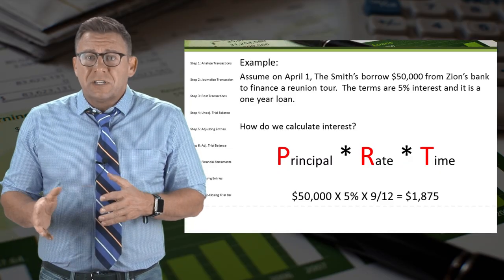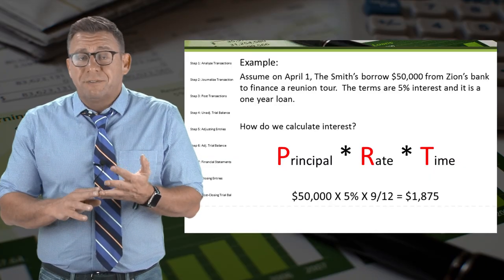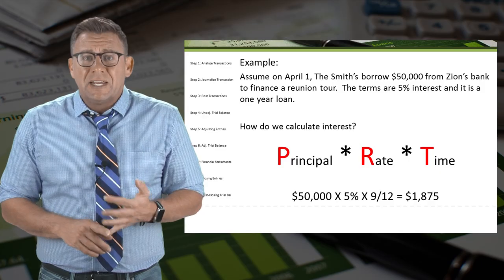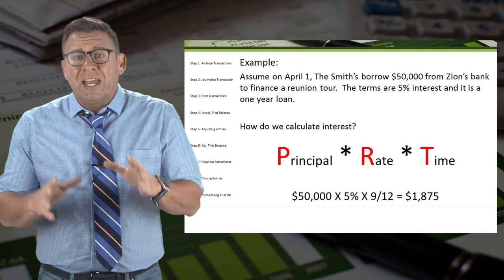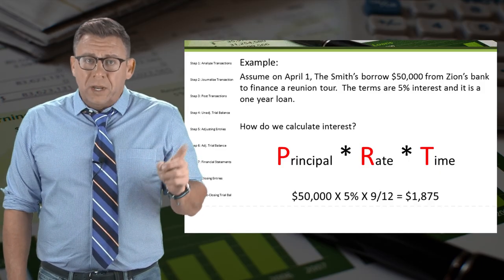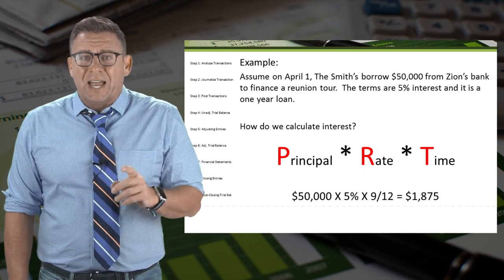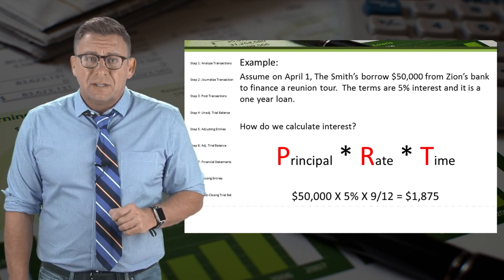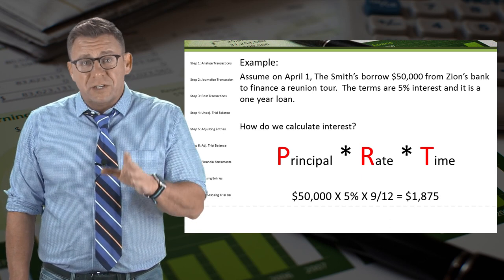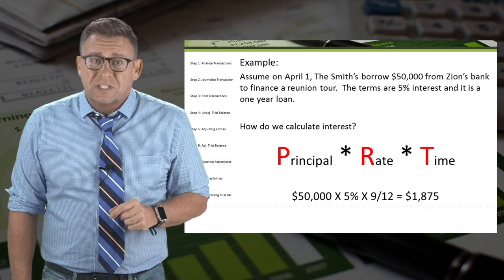In this example, the principal is $50,000 times 5% annual interest times 9/12 of the year. April 1 to December 31 is 9 months. Thus, the amount of interest expense to accrue is $1,875.